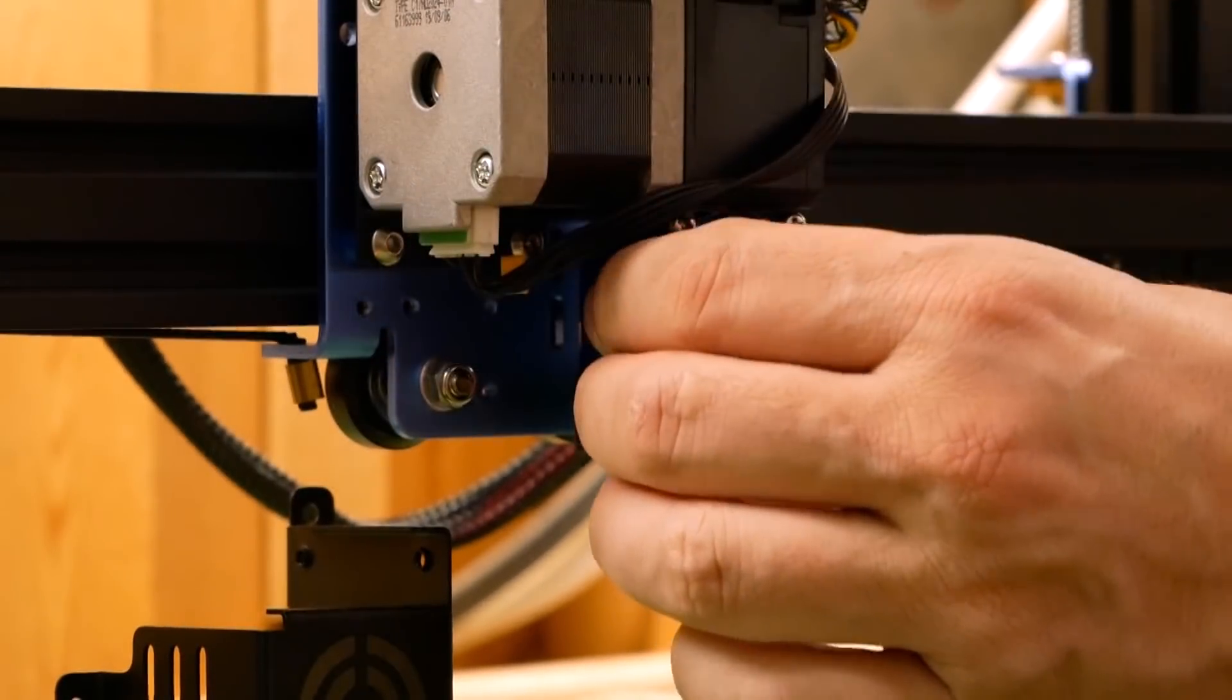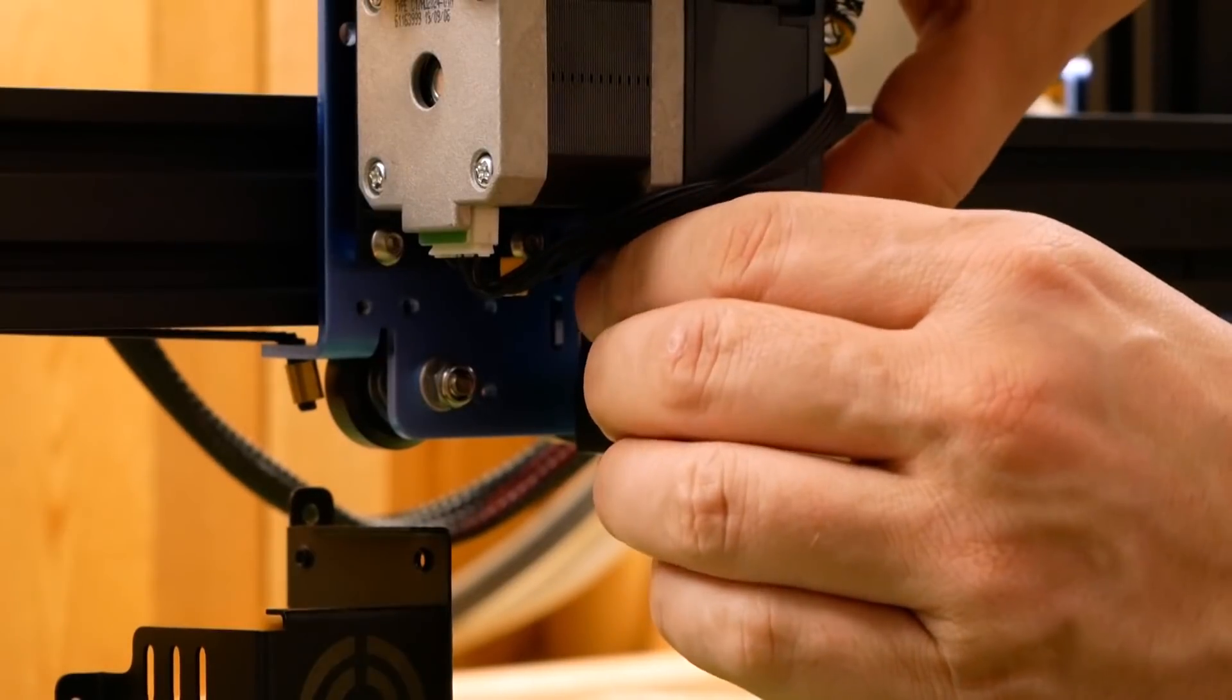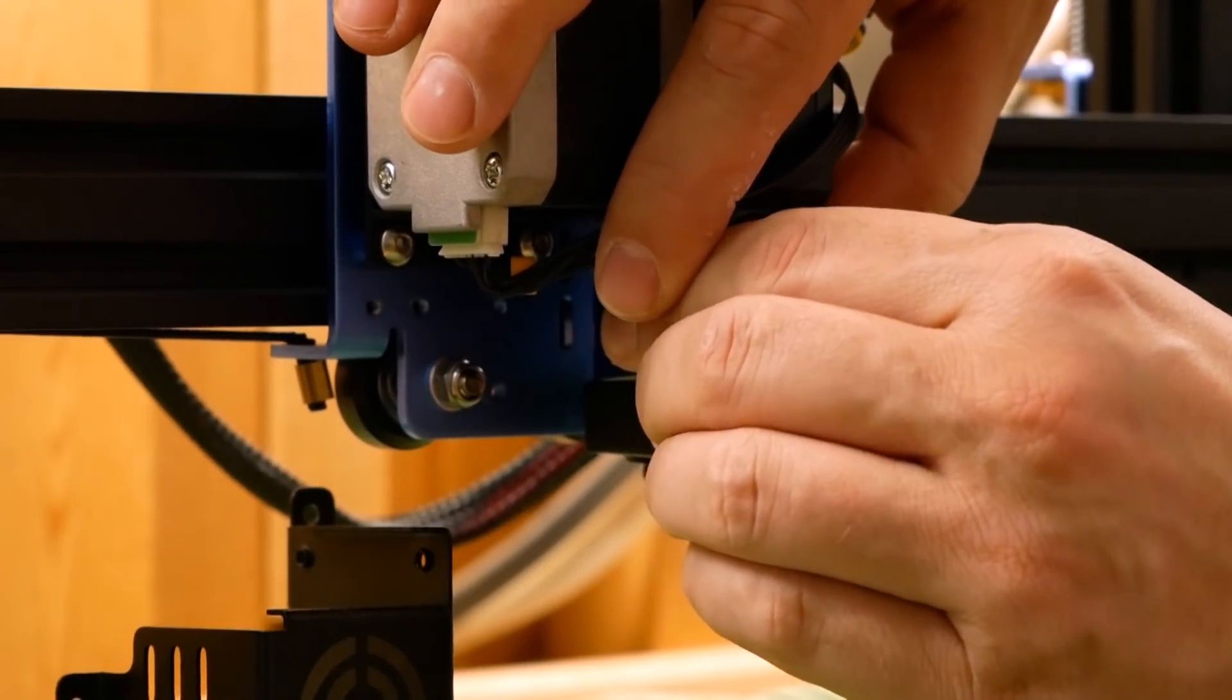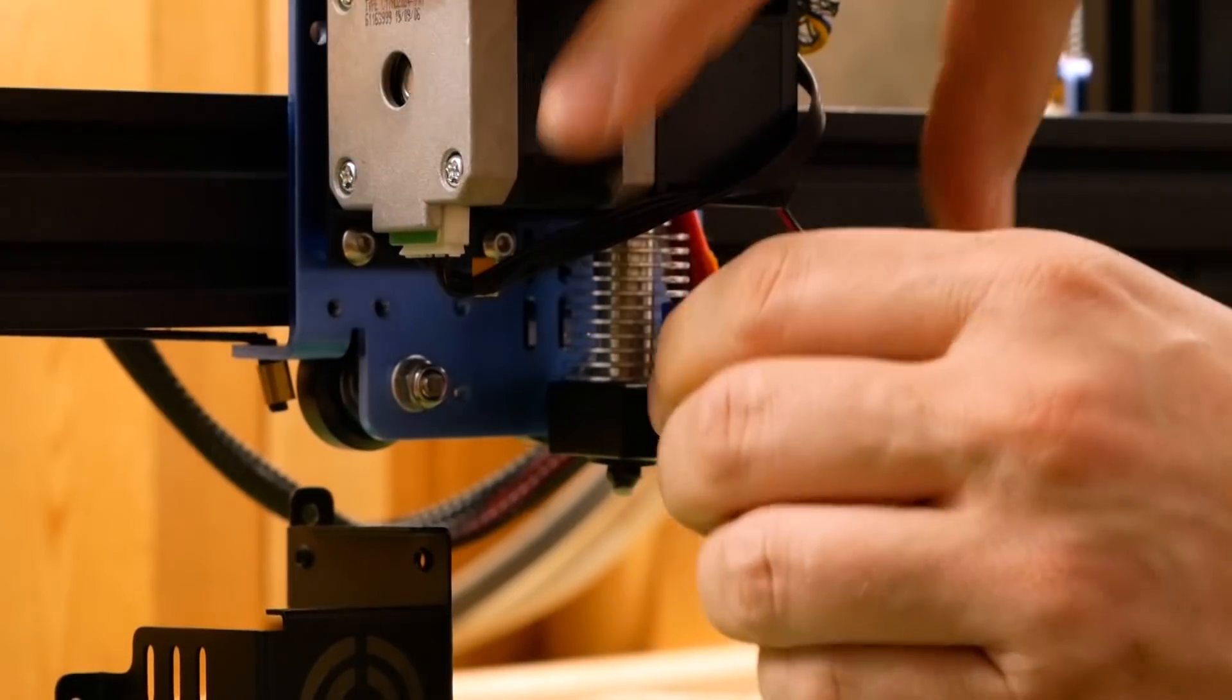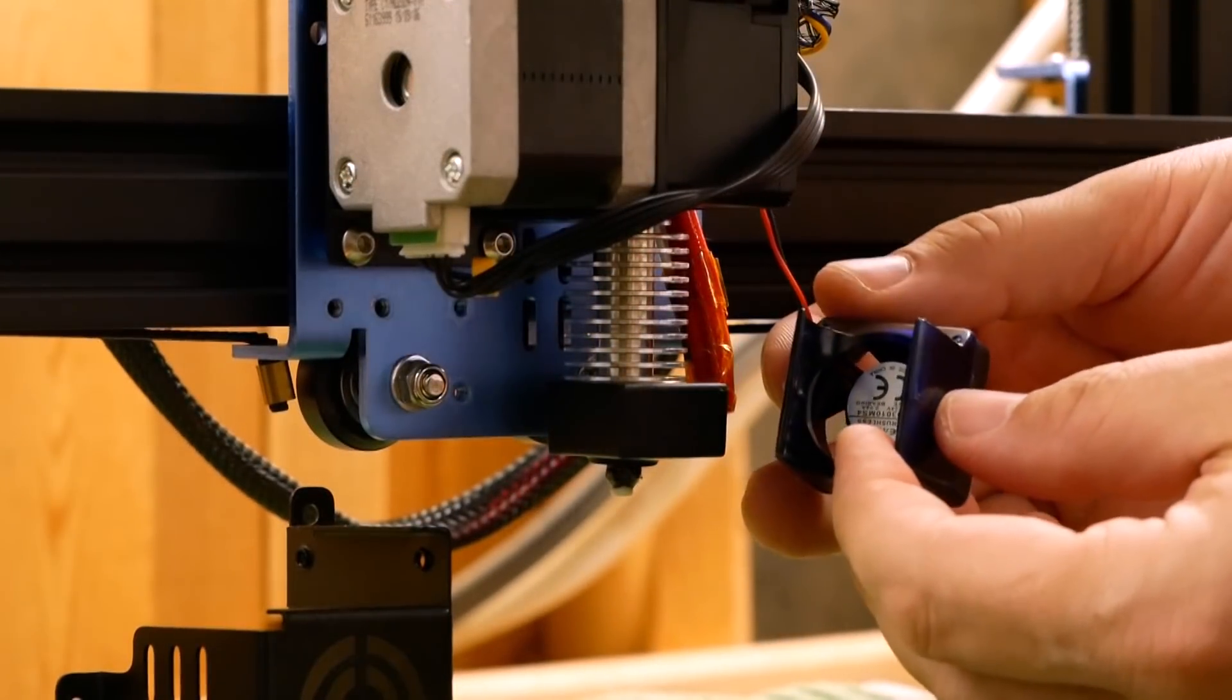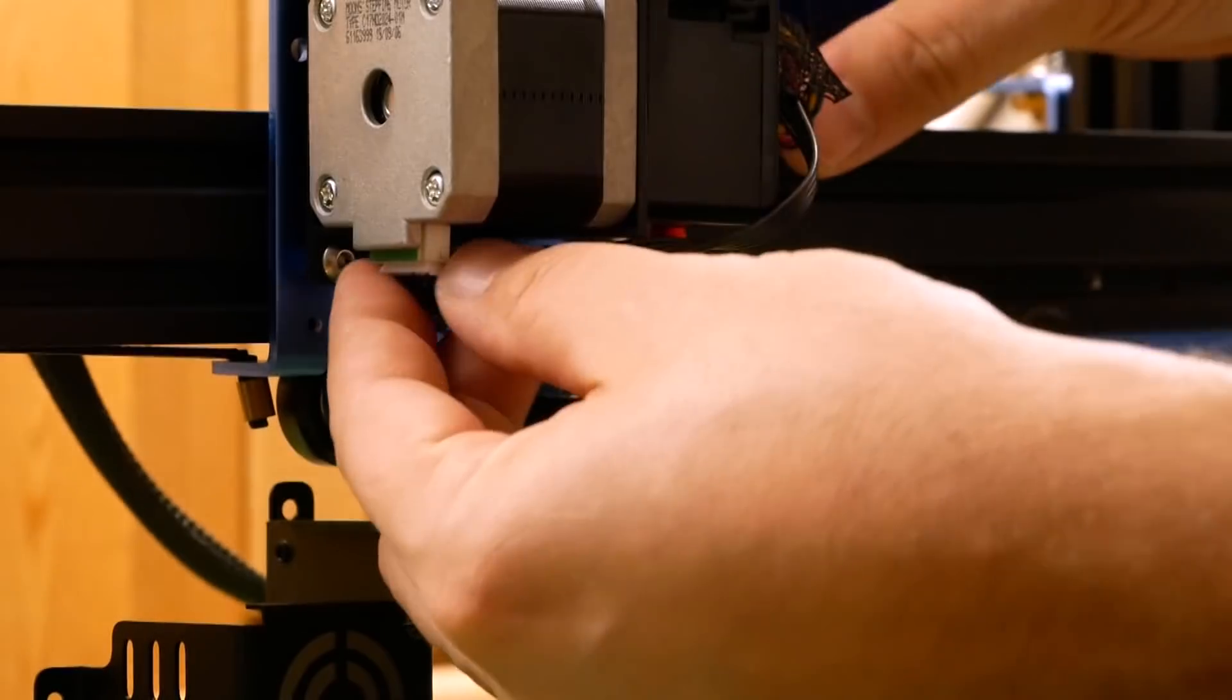This is the cooling fan for the heat sink and that just is clipped on and we can carefully pull that off. It just comes off like so.